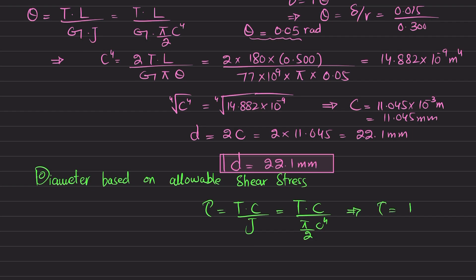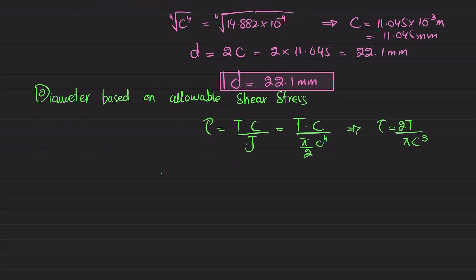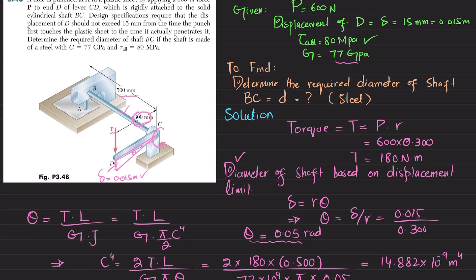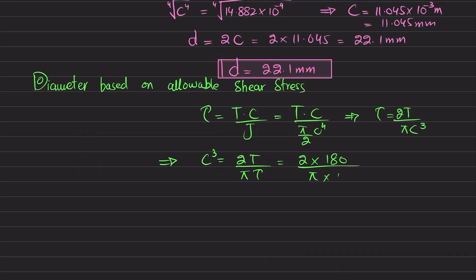From here, tau equals 2T divided by pi c cubed. We are interested to find the radius, so c cubed equals 2T divided by pi times tau. We put the values: 2 times 180 divided by pi and allowable shearing stress is 80 megapascals, or 80 times 10 to the power 6.